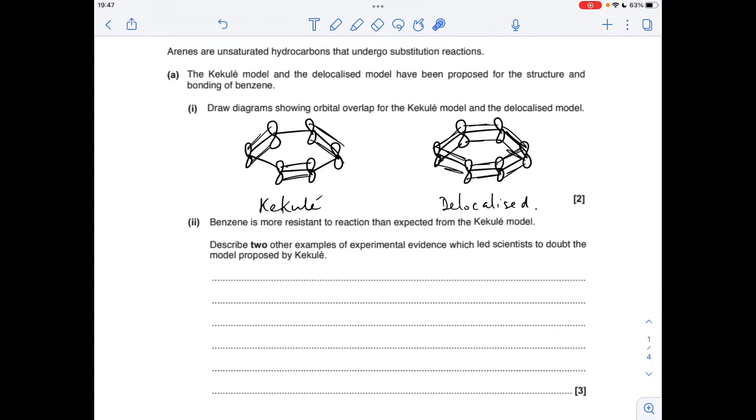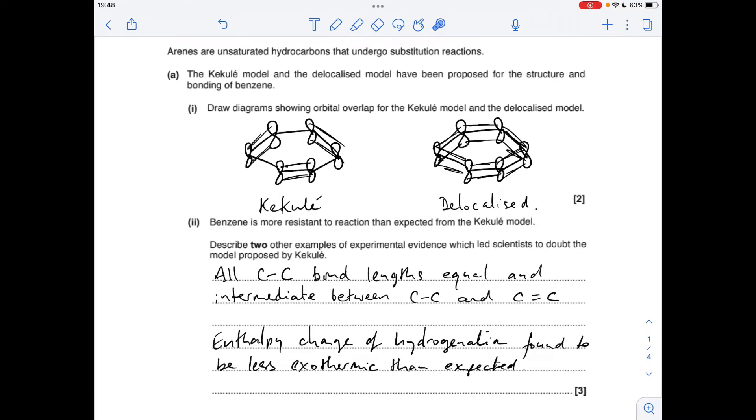Moving on to the next part, these two extra pieces of experimental evidence. Well, the first one I've gone for is the C-C bond lengths being equal and would need to say that they are intermediate between carbon-carbon single and carbon-carbon double bond lengths. The other one is the enthalpy change of hydrogenation. Just be careful that you say that and not hydration, which is a common mistake. So the enthalpy change of hydrogenation was found to be less exothermic than expected.